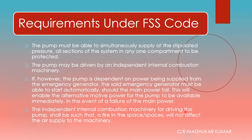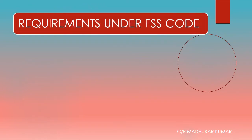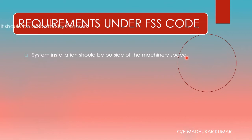If an independent internal combustion engine is used to drive the pump, fire in the protected space must not affect the air supply of the engine. The system installation should be located outside machinery spaces. This ensures the IC engine air supply is not affected by a fire in the machinery space.